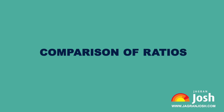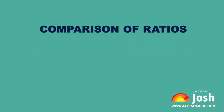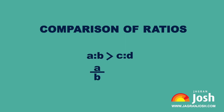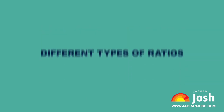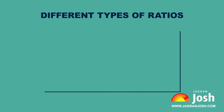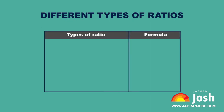Comparison of ratios: ratios can be compared. When it is said that A is to B is larger than C is to D, it means A upon B is larger than C upon D.